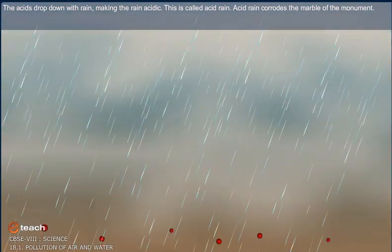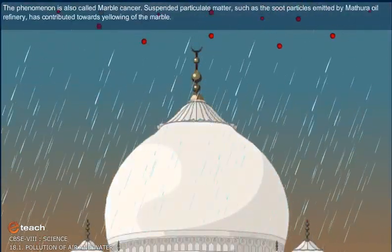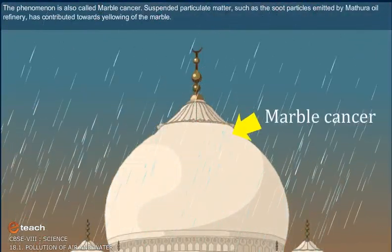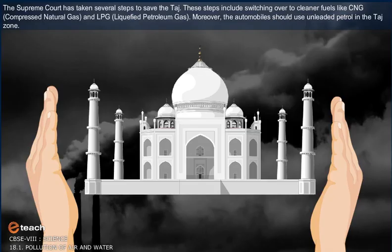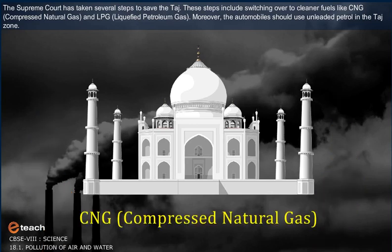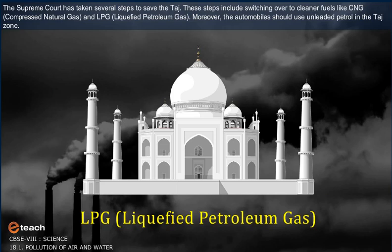Acid rain corrodes the marble of the monument. The phenomenon is also called marble cancer. Suspended particulate matter such as soot particles emitted by Mathura Oil Refinery has contributed towards yellowing of the marble. The Supreme Court has taken several steps to save the Taj, including switching over to cleaner fuels like CNG (compressed natural gas) and LPG (liquefied petroleum gas). Moreover, automobiles should use unleaded petrol in the Taj zone.